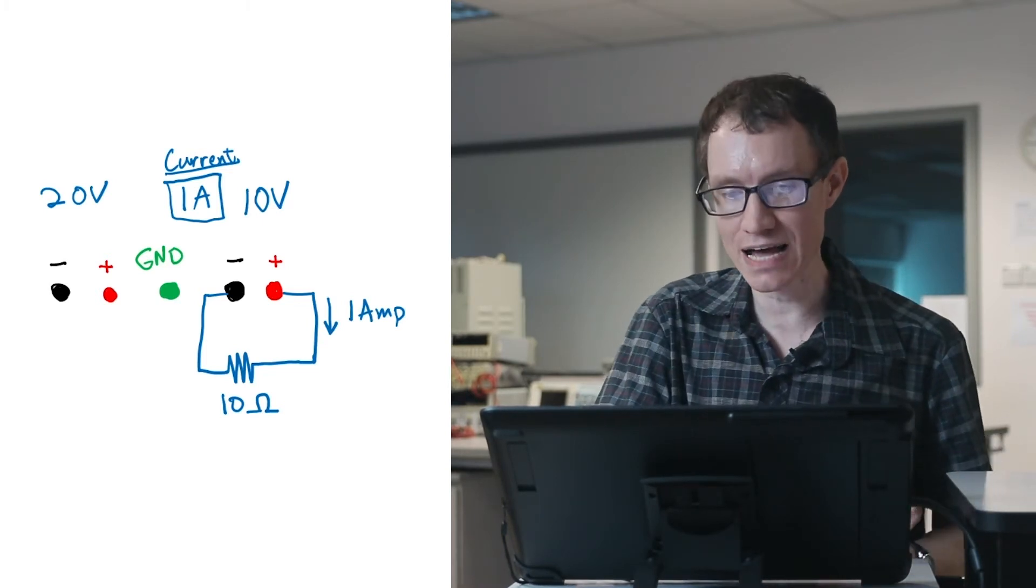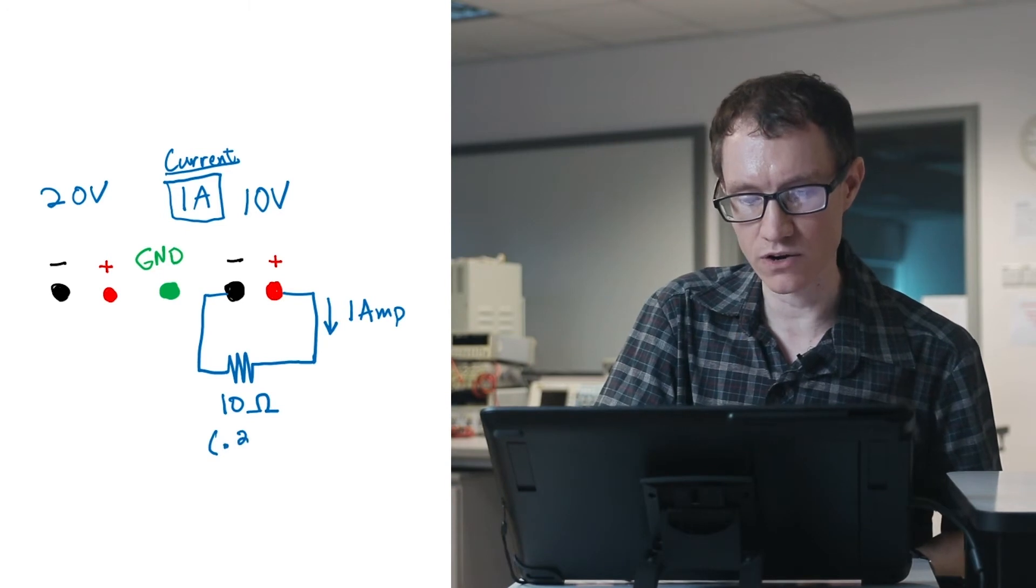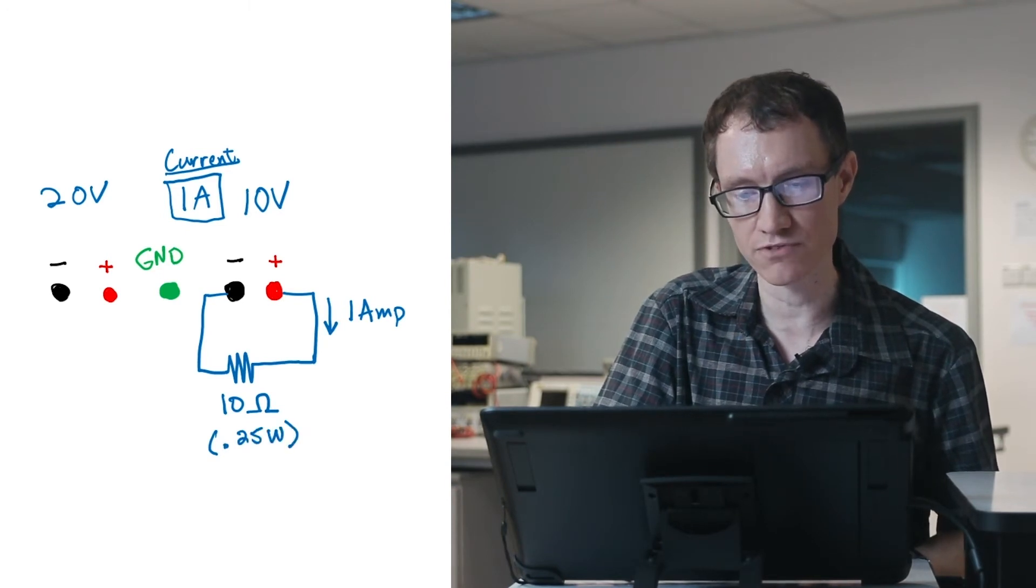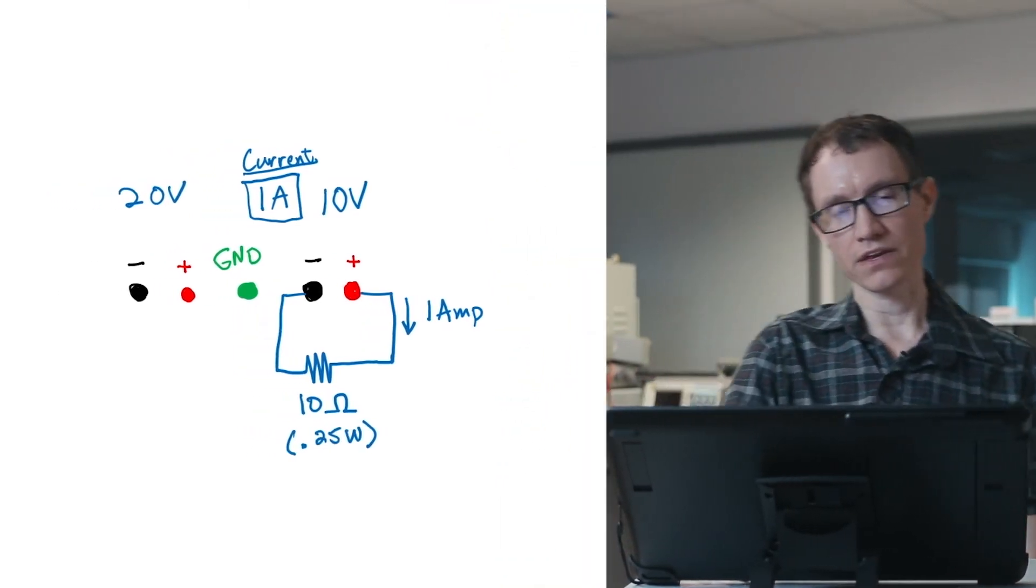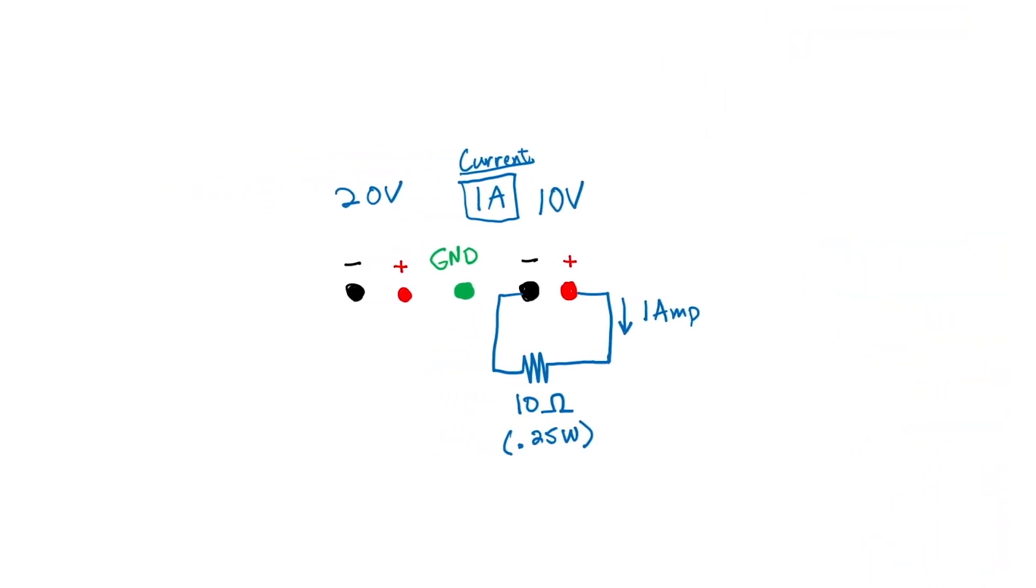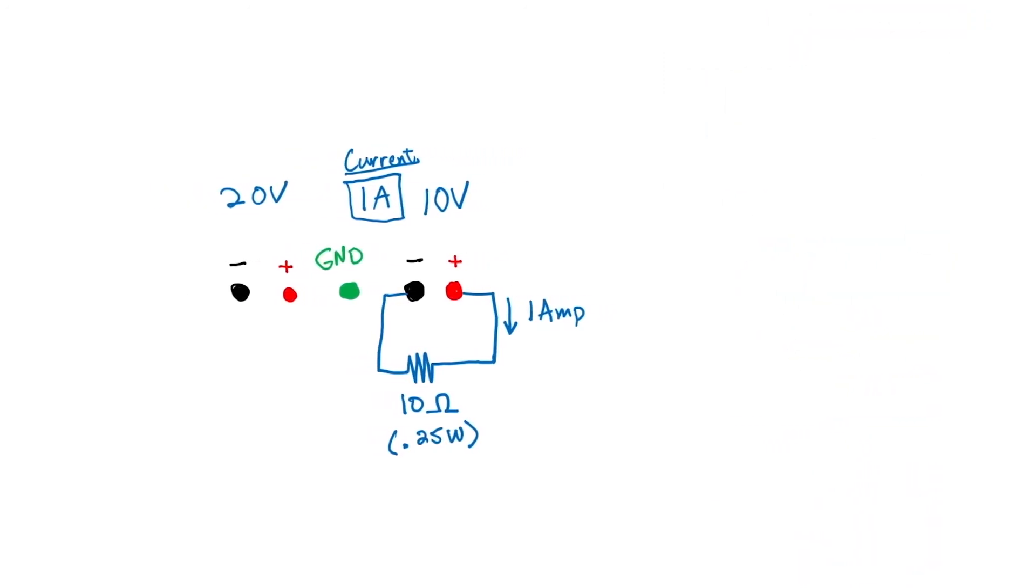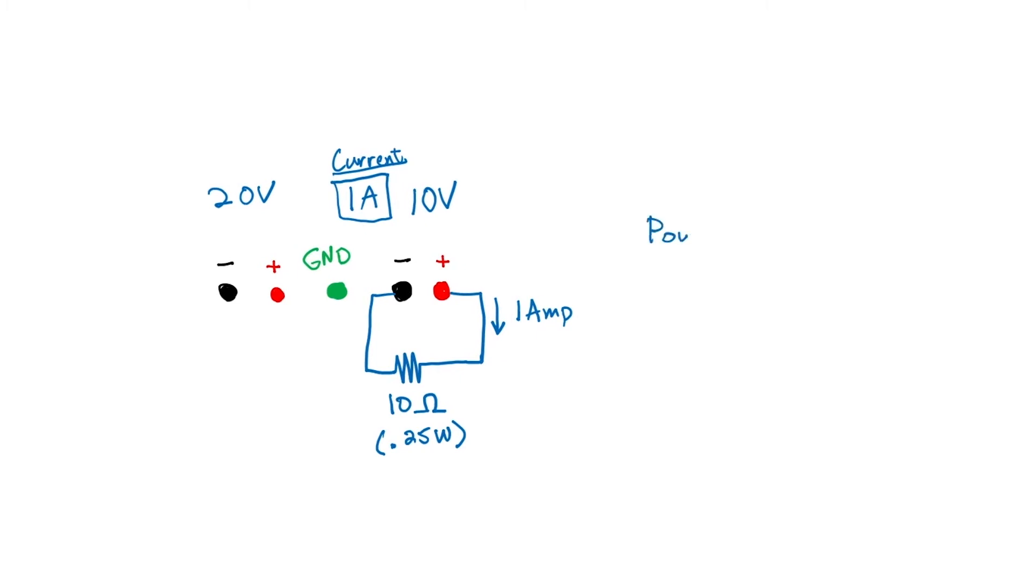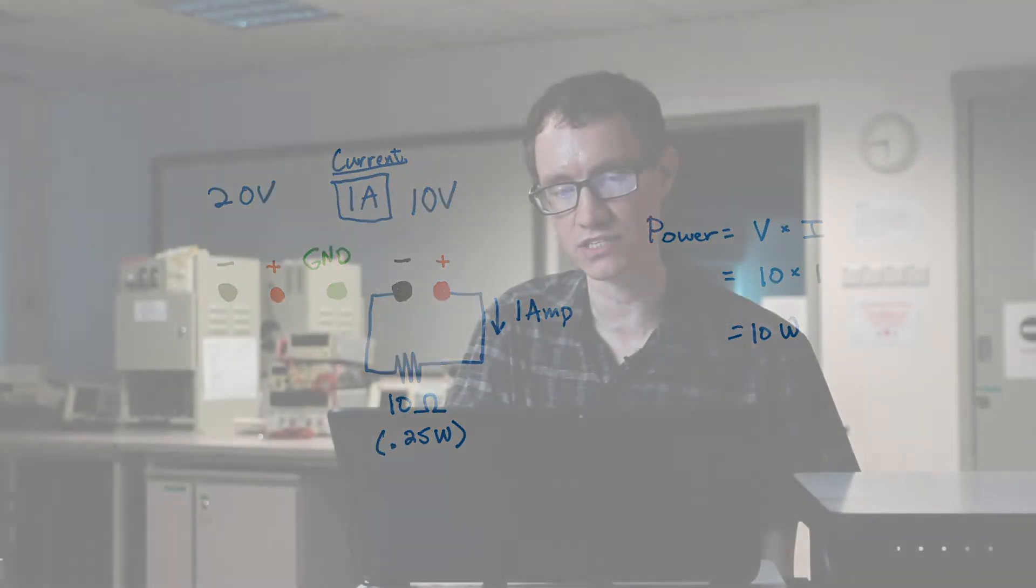If this resistor, for example, is rated at only 0.25 watts, then let's consider whether the situation I've shown here is a safe situation for the resistor or not. We know that power is voltage times current. And we have 10 volts and 1 ampere. So in this case, we have 10 watts of power that would need to be dissipated by that resistor. That would be a very dangerous situation.